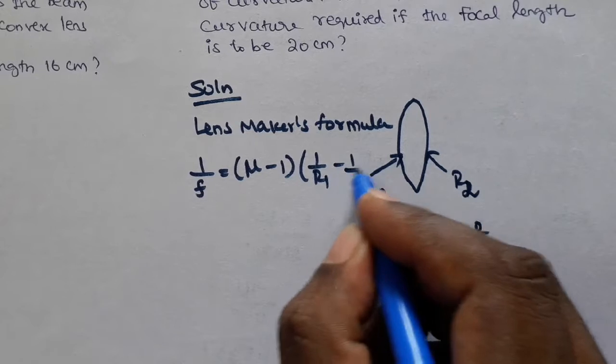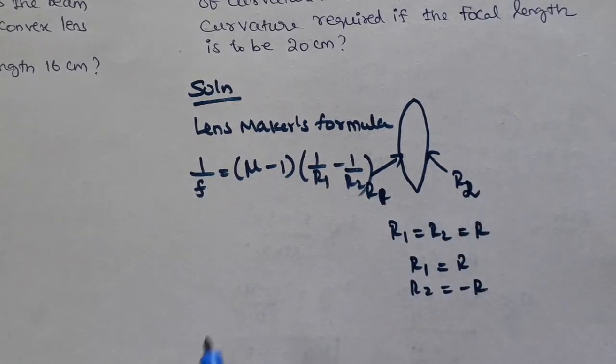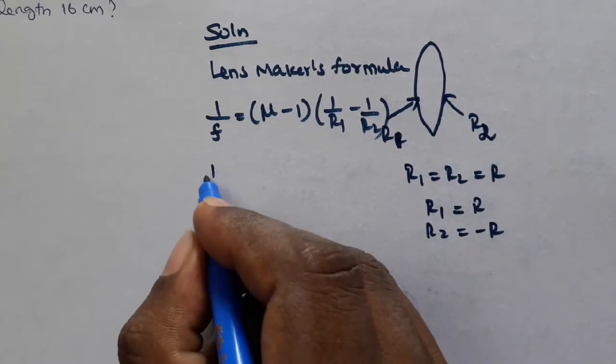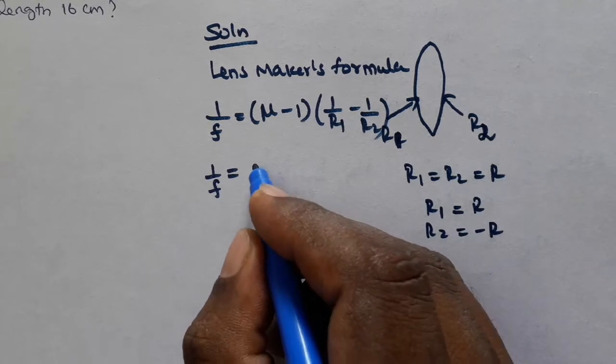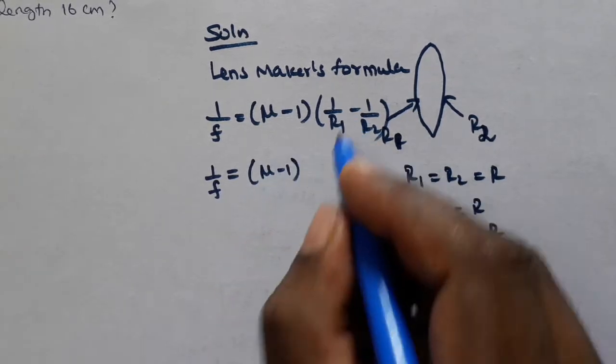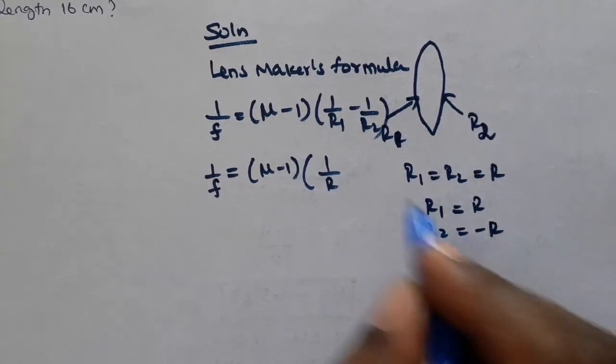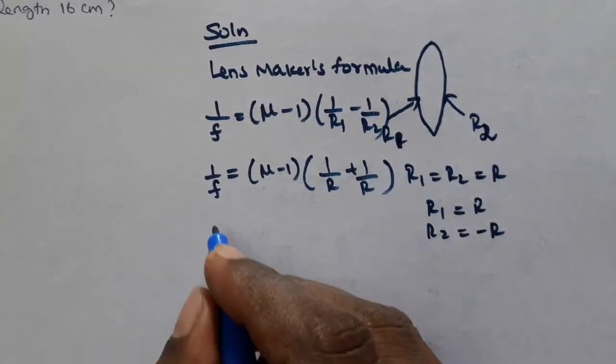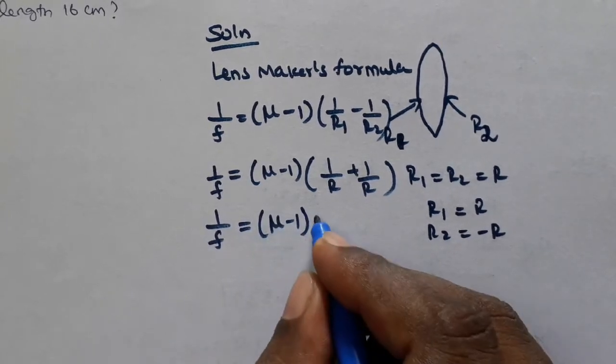1/F = (μ-1)(1/R1 - 1/R2). Here μ is the refractive index of the glass because the lens is made of glass. Since R1 = R and R2 = -R, we get 1/F = (μ-1)(2/R).